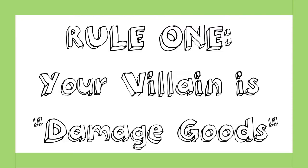So let's start with my rules for villains — there are five of them. Rule number one: your villain is damaged goods. It sounds bad, but hear me out. What I'm getting at is that the world has been really cruel to them, and they hate the world — that's pretty much the gist of it.